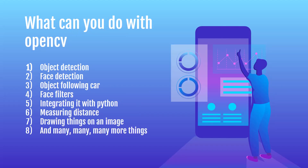So what can you do with OpenCV? Here are some of the simple projects you can do: object detection, face detection, object-following car, face filters, integrating it with Python, measuring distances using a dual camera or stereo vision, drawing things on an image, and many more things. These are just some simple examples — I'll be talking about some cooler projects you can do with OpenCV in a moment.